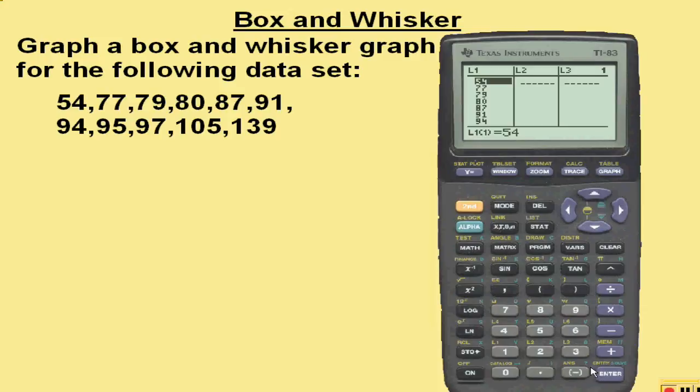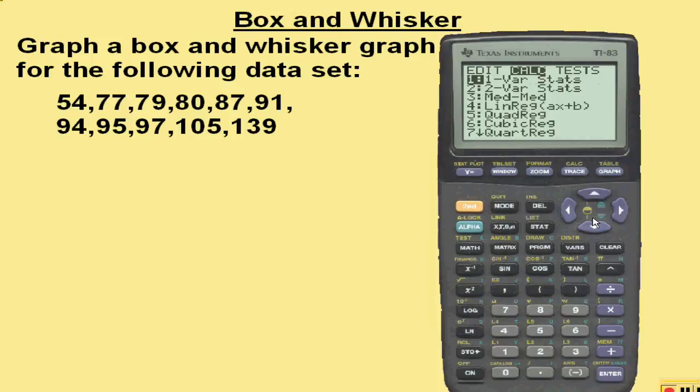Once it's entered, hit Stat again, and arrow right to Calc. The first choice is called 1-var-stats, and that's the one we want. We hit Enter.